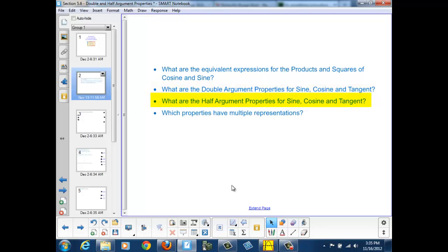What are the Half Argument Properties for sine, cosine, and tangent? And finally, which properties have multiple representations?